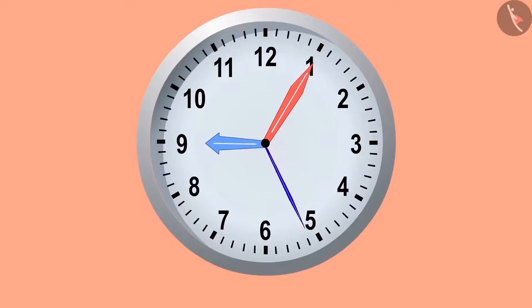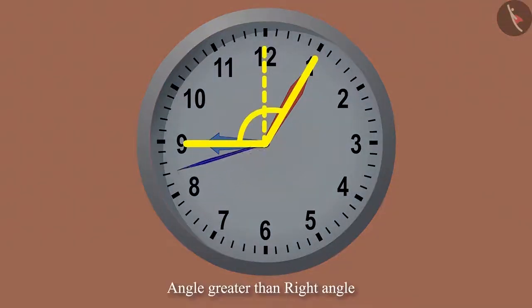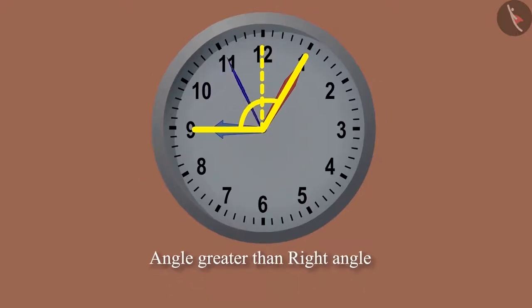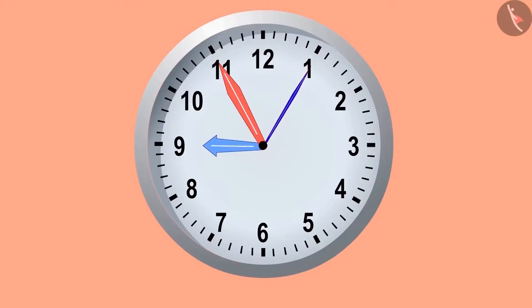Now look, it is 5 minutes past 9 now. If we look at the angle made by these two hands, they are making an angle greater than a right angle. In the same way, when it is 5 minutes to 9, then they would be making an angle less than a right angle.